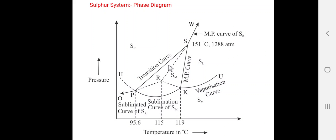The second component of the phase diagram is the curves. As with the water system, the curves are of two types: stable curves and metastable curves. There are six stable curves in the sulfur system phase diagram.